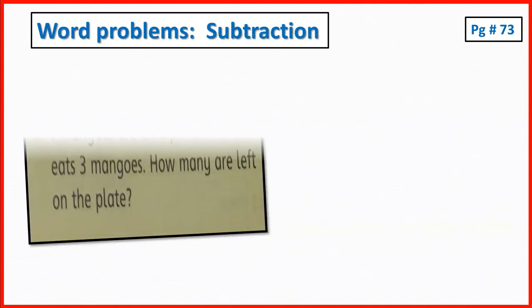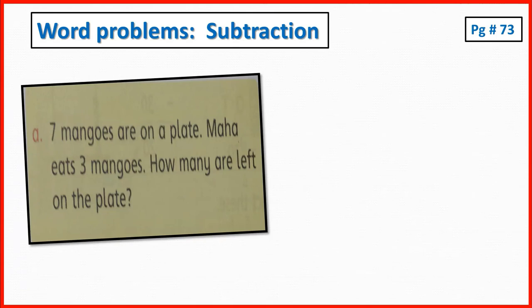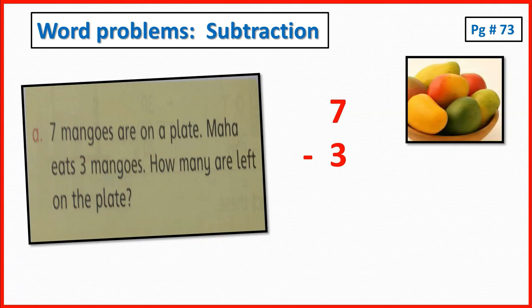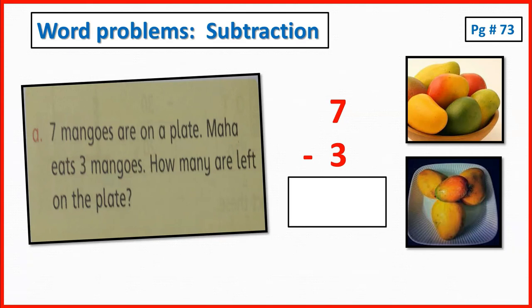Now I am going to do page number 73, word problems subtraction, question number 1: write the sum in the box and find the answer. The first one is: 7 mangoes are on a plate. Maha eats 3 mangoes. How many are left on the plate? 7 mangoes are on a plate and Maha eats 3. There are 4 mangoes left on the plate.